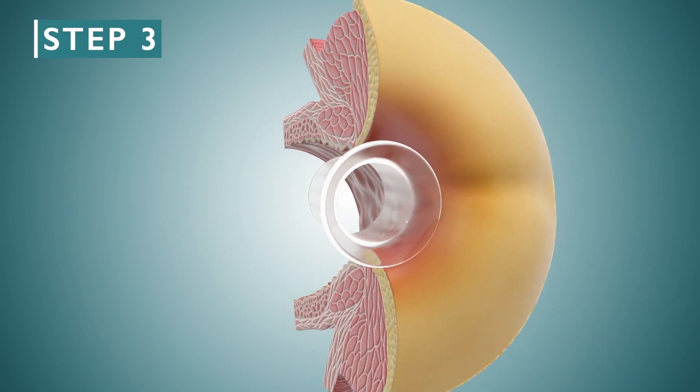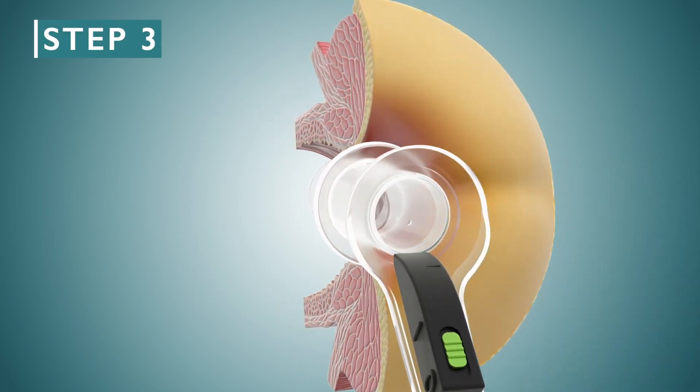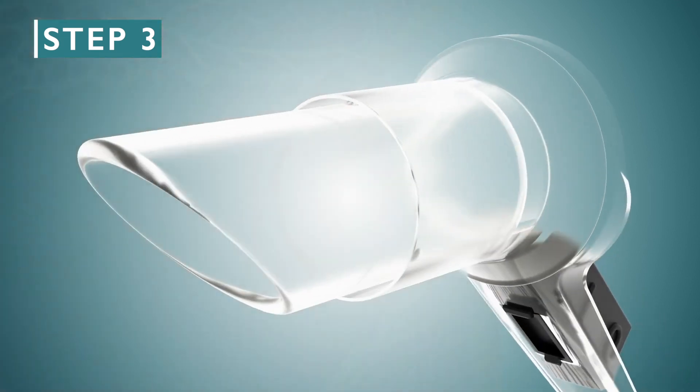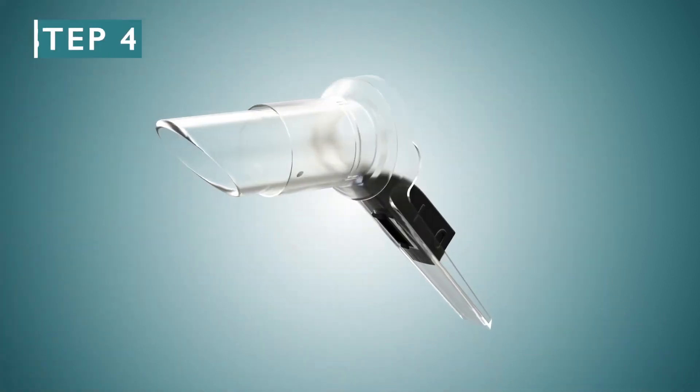Step 3. Insert the main body by aligning the locking system on the main body and sleeve, then turn on the LED module. Step 4.